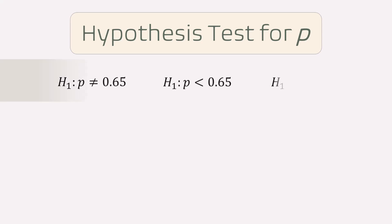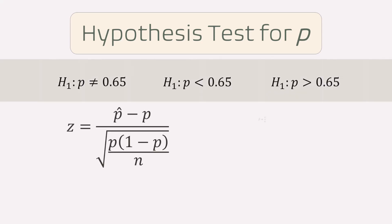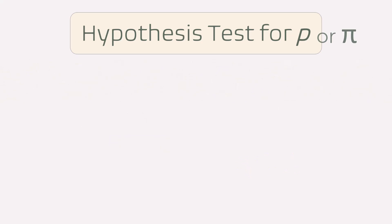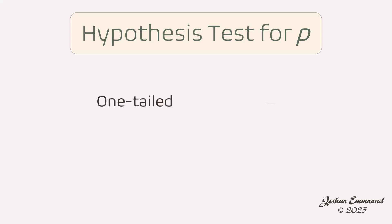In this video, I will be showing examples of how to conduct hypothesis tests for a population proportion P or pi. I will be discussing one-tailed and two-tailed tests using the p-value approach.